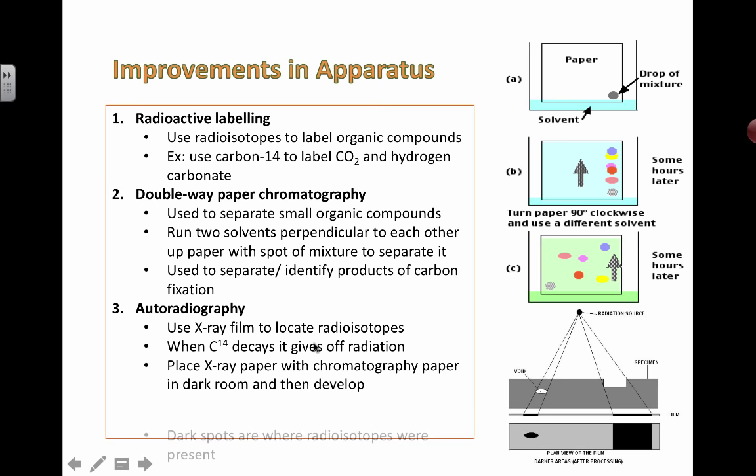Combine these three things - use radioisotopes, separate a bunch of things out that contain the radioisotopes and then take a picture of it using autoradiography. You can actually visualize what's happening because otherwise you can't see the products. Autoradiography is using x-ray film to be able to see the actual radioisotopes that were given off by the carbon-14. These are the three techniques that were used to help Calvin carry out his experiments.